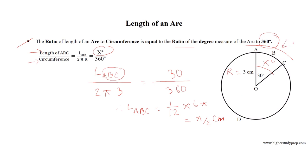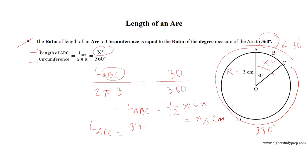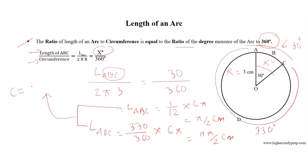Since the minor arc has a measure of 30 degrees, the major arc ADC has a measure of 330 degrees. The length of the major arc equals 330 degrees divided by 360 degrees, multiplied by 6 pi, which results in 11 pi over 2 cm. If we sum the two arc lengths — the major and minor arcs — we get the circumference of the circle: 2 pi R equals 6 pi, where R equals 3 cm.